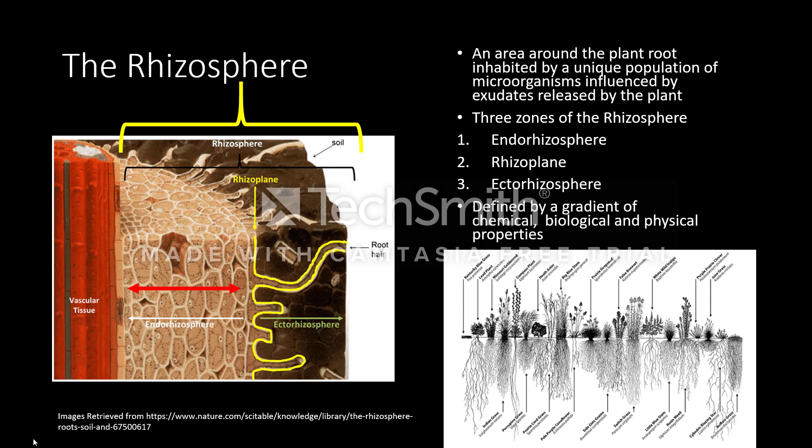Finally, we have the ectorhizosphere, which is the area which extends from the rhizoplane and into the bulk soil. The rhizosphere is defined by a gradient of chemical, biological, and physical properties.